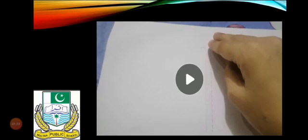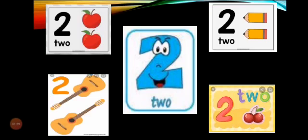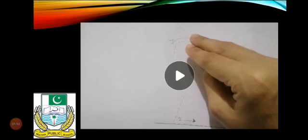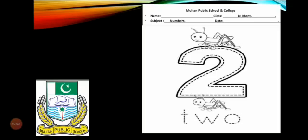This is number two: one, two — two apples; one, two — two guitars; one, two — two pencils. This is the tracing pattern of number two, which we discussed in our previous lesson. If you want to watch this video again, you can. This is the worksheet of number two — that was your home task, and I hope you have done it nicely.